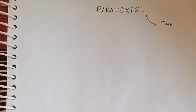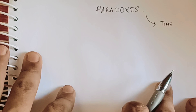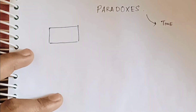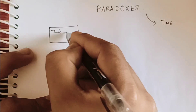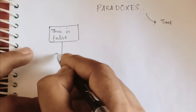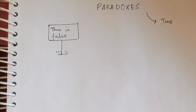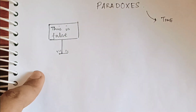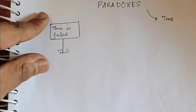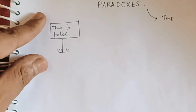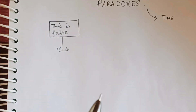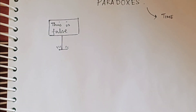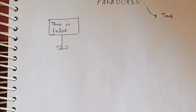I will explain it visually on my notepad. Suppose you see a sign where it writes 'This is false.' Now, if this sign is writing the truth — meaning what's written on this signboard is true — then 'This is false' is the truth. But if whatever is written on this board is false, meaning it's wrong, then 'This is false' becomes true.